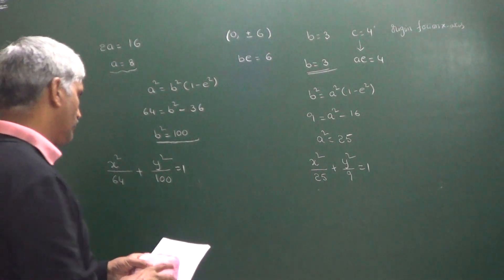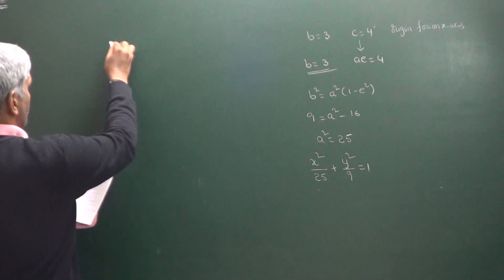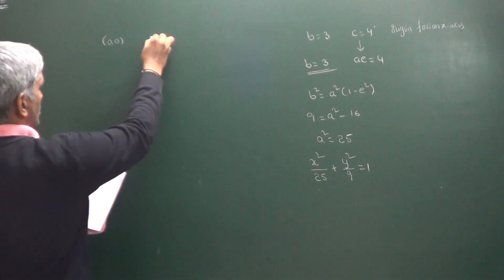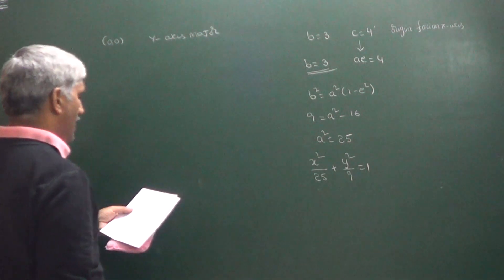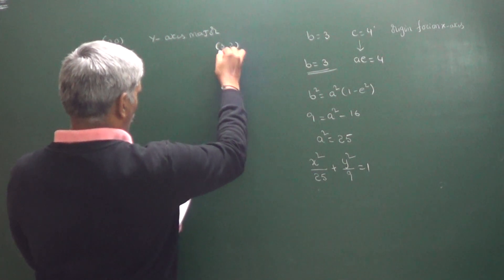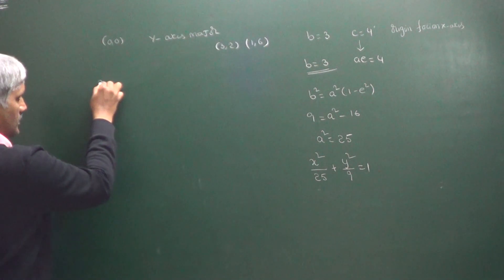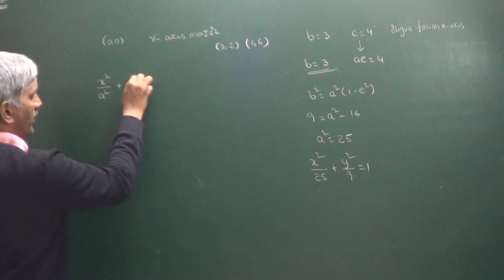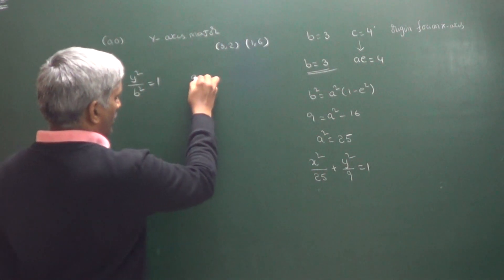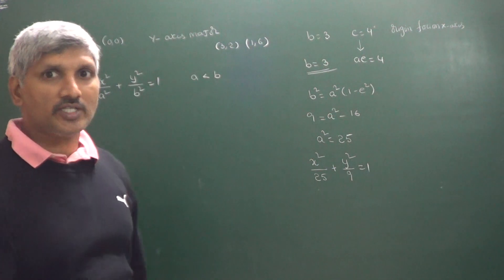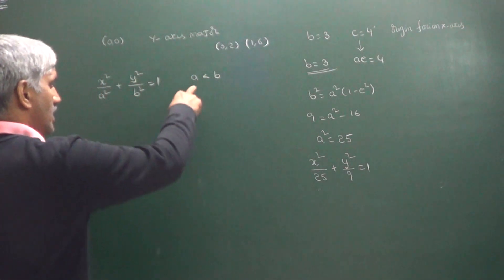The next question asks to find the equation of an ellipse with center at origin and major axis on the y-axis. The ellipse passes through the points (3, 2) and (1, 6). The equation form is x²/A² + y²/B² = 1 where A < B since the major axis is on the y-axis, meaning foci lie on the y-axis.